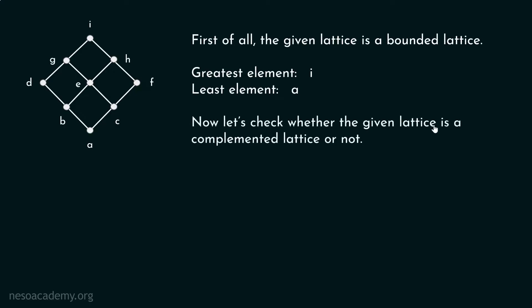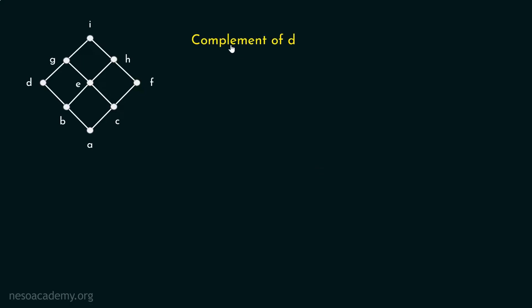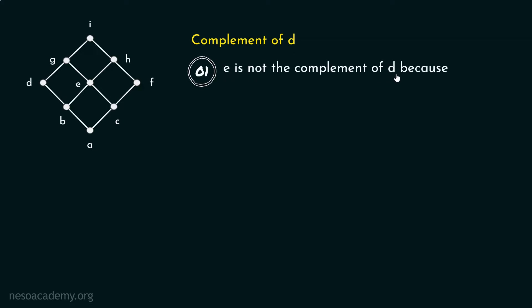Now let's check whether the given lattice is a complemented lattice or not. Let's find the complement of element D. E is not the complement of D because the least upper bound of E and D is equal to G, which is not equal to I.